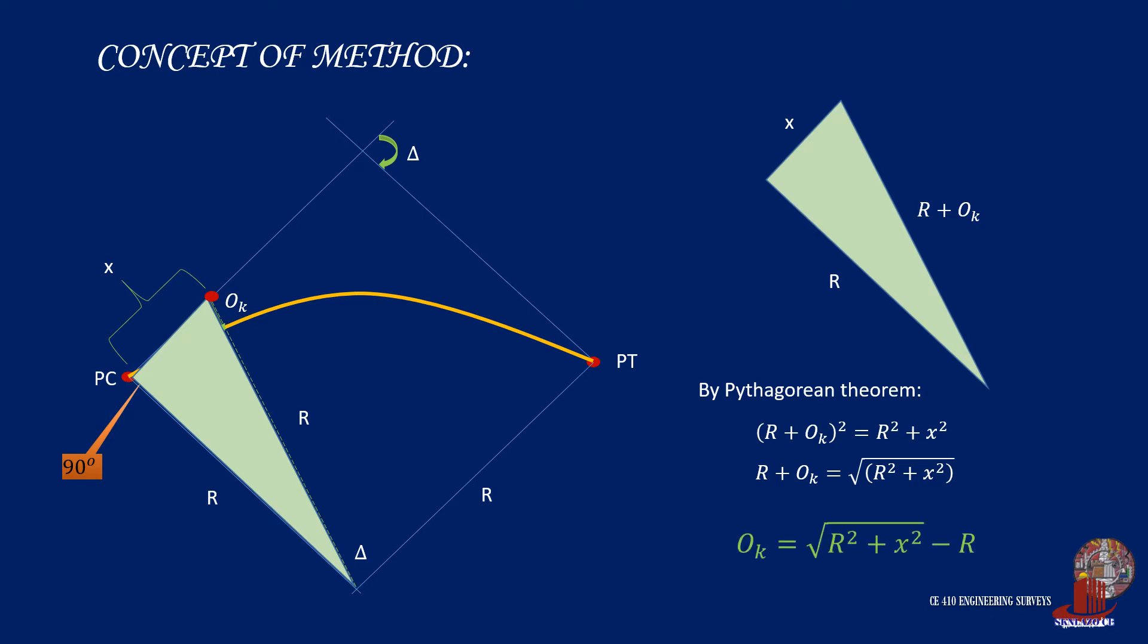And simply extract O sub k from the equation by transferring r to the other side and we get O sub k is equal to the root of r squared plus x squared less r. This equation will be computing the length of O to draw the curve.